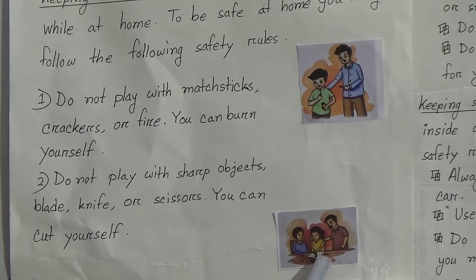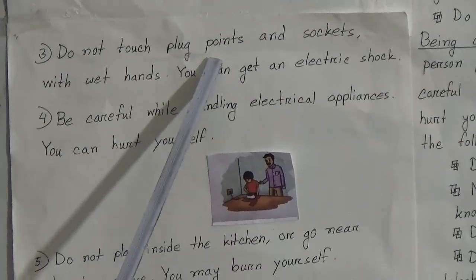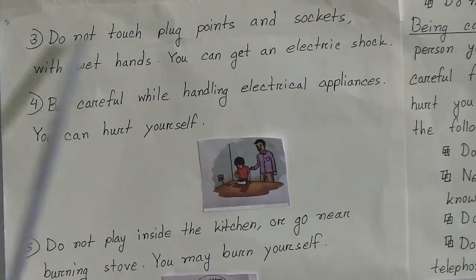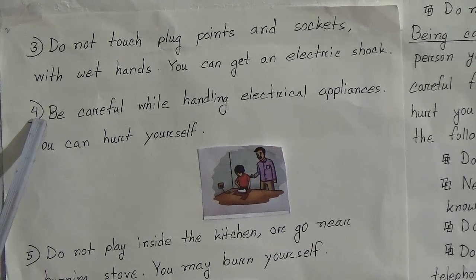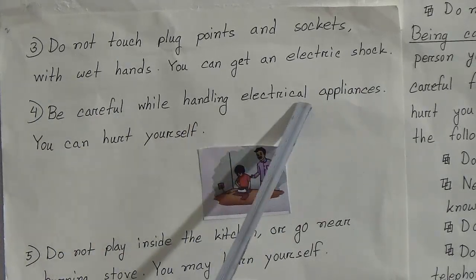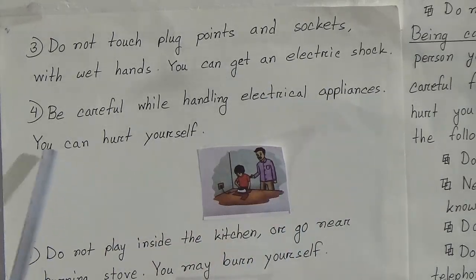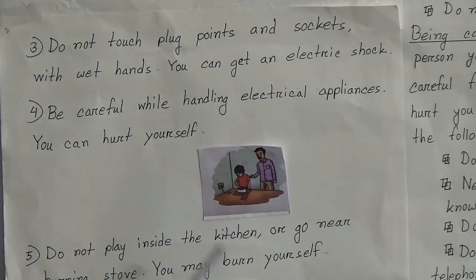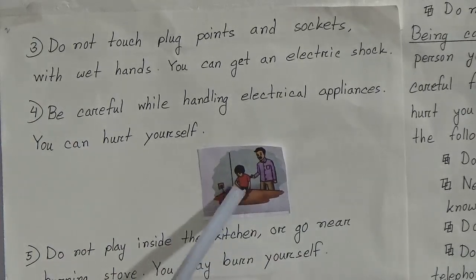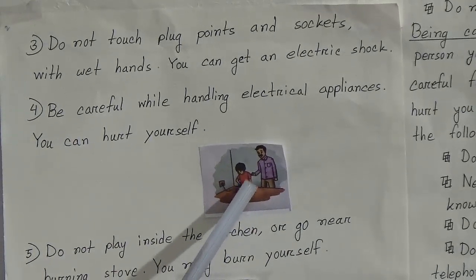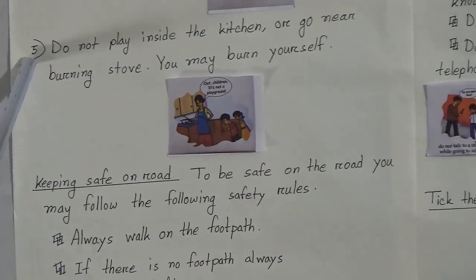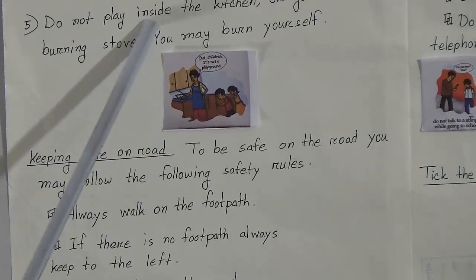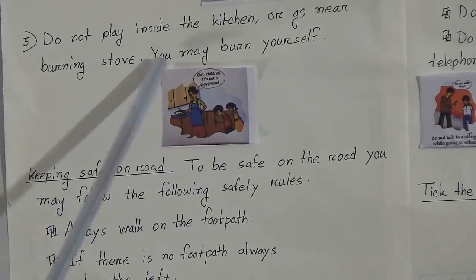You can see this picture — this girl cut her finger. Rule number three: do not touch plug points and sockets with wet hands — you can get an electric shock. Rule number four: be careful while handling electrical appliances — you can hurt yourself. You can see this picture — this boy is ironing his clothes with the help of elders.